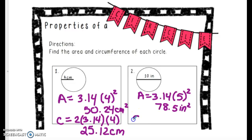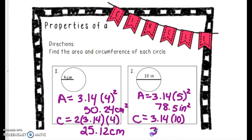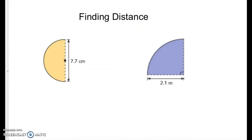For circumference in example two, since we're given the diameter we're going to use the formula pi times diameter, so 3.14 times 10. The circumference of this circle is 31.4 inches. Complete the rest of the graphic organizer on your own. The following examples should go in your notes, not on the organizer, or you can write them on the back.